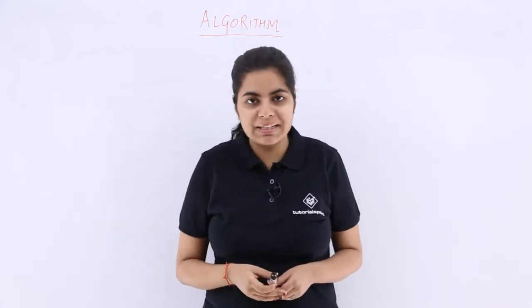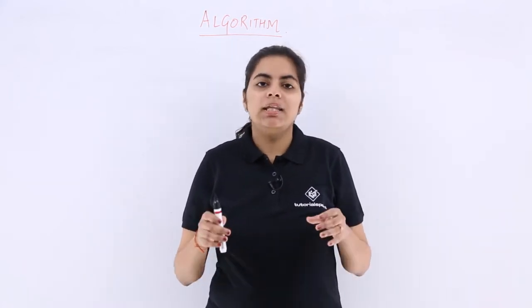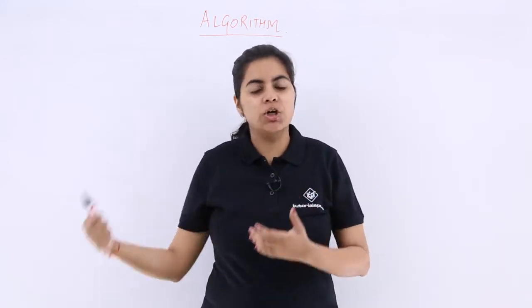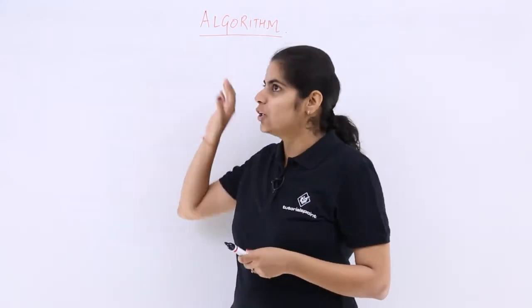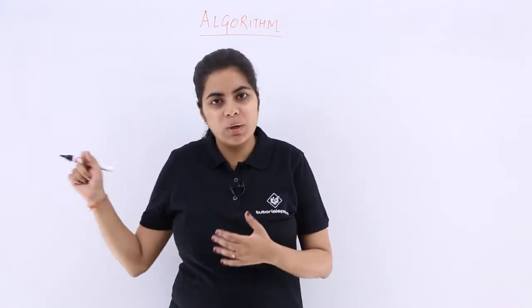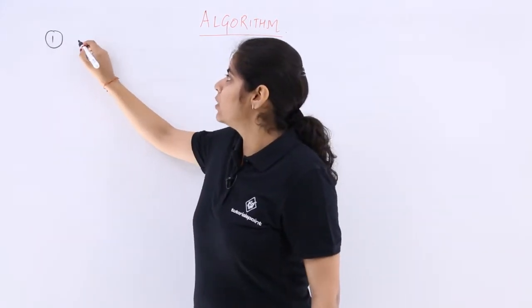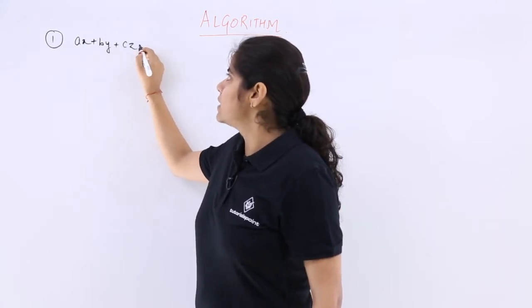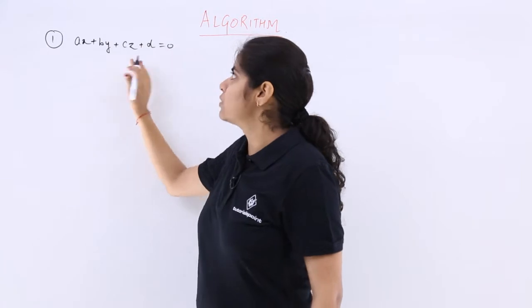Now what is the algorithm to find out the equation of a plane? The equation of plane has to follow a certain procedure in order to solve the questions. So the algorithm that you have to follow will be somewhat like this. What I'll do is I'll assume the general equation of a plane to be Ax plus By plus Cz plus D is equal to 0. This we already know.